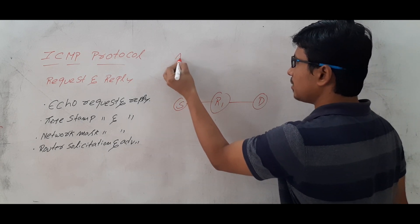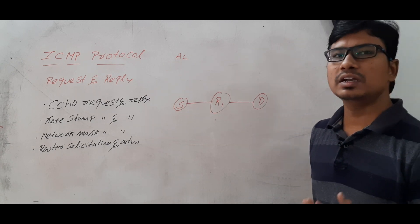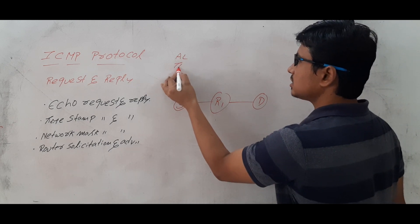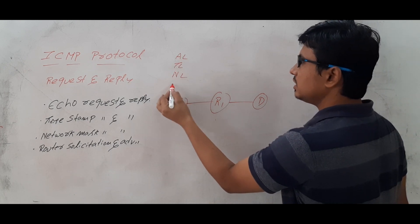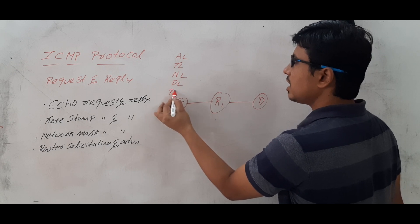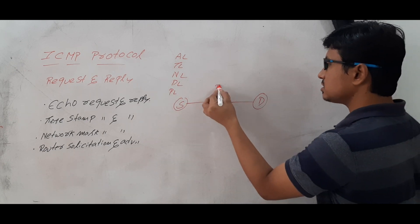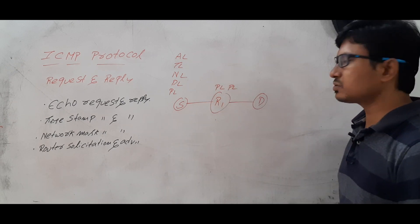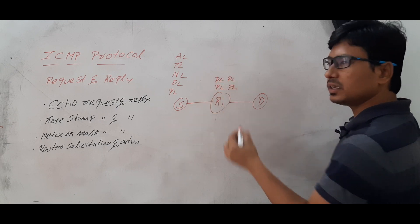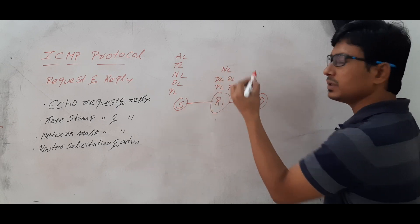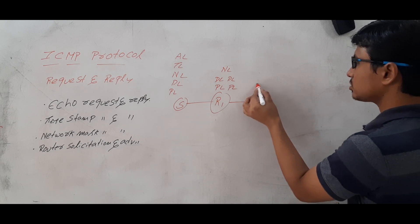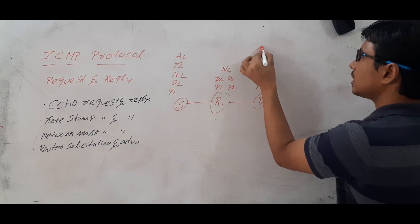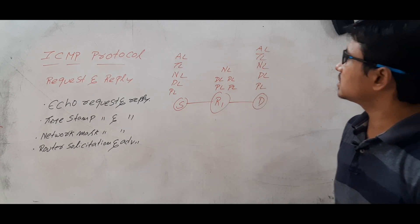The source will have the application layer — let's say source and destination are using the TCP/IP model. It has the application layer, transport layer, network layer, data link layer, and physical layer. The router will also consist of a physical layer; if it has two ports, two physical layers and two data link layers will be there and one network layer. Similarly, the destination will also consist of physical layer, data link layer, network layer, transport layer, and application layer.